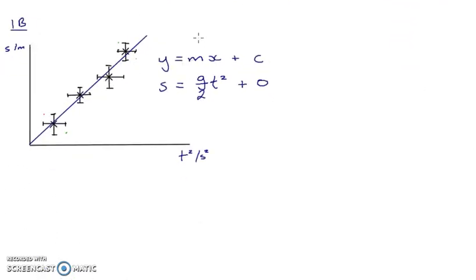With the IB, in order to draw our lines of best and worst fit, we have to use uncertainty bars. Now we can use uncertainty bars in A-level, but there's no stipulation that they need to be used when you're doing lines of worst fit.